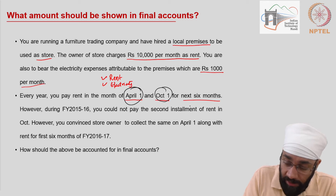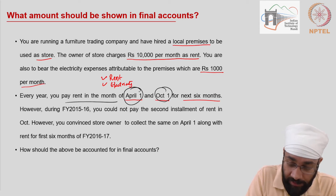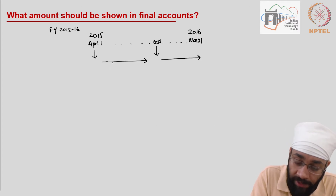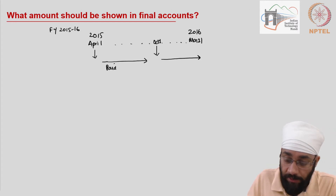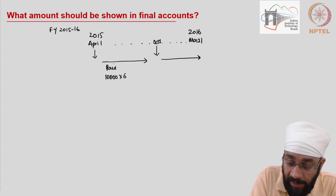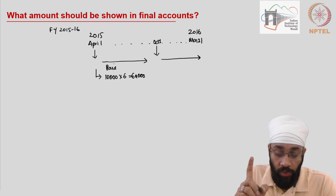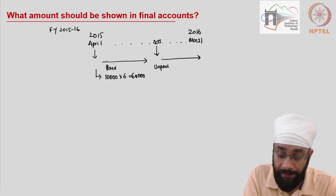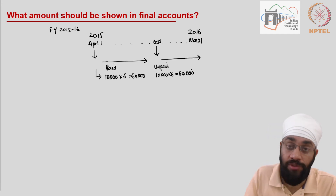Let's look at the arrangement. During this year, you could not pay the second installment. So you paid 10,000 a month multiplied by six — 60,000 was paid on April 1st. On October 1st, you could not pay. So this is unpaid. The unpaid amount is 10,000 into six as well, so 60,000 has not been paid.